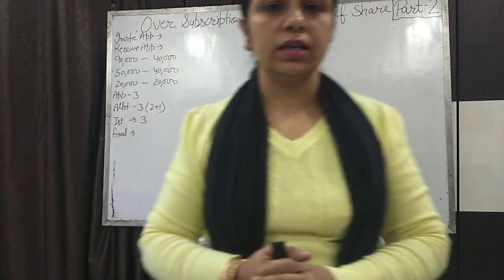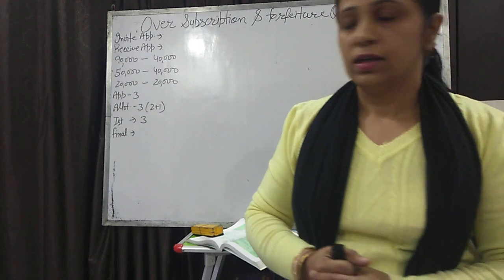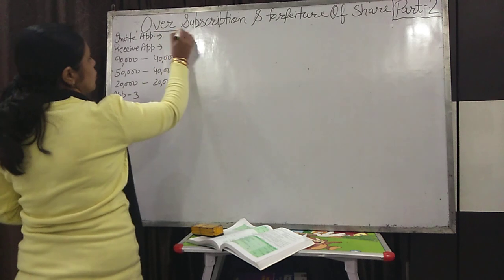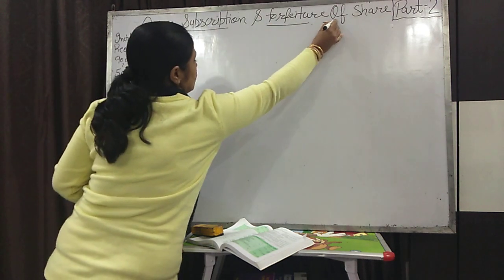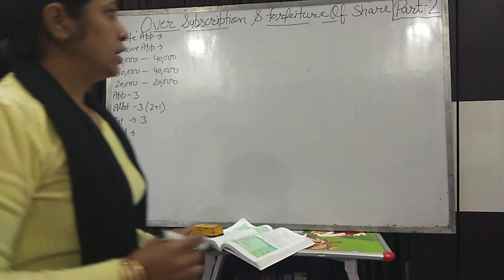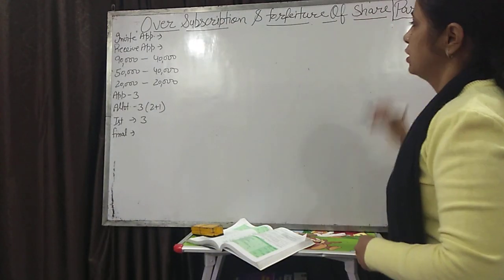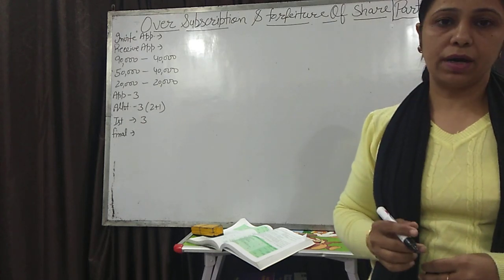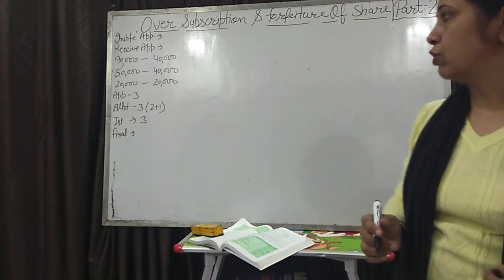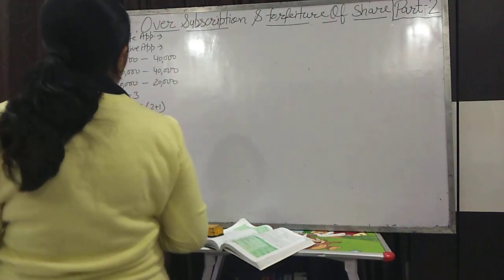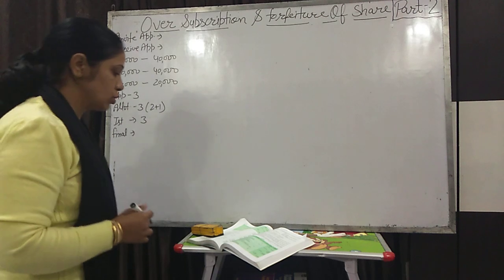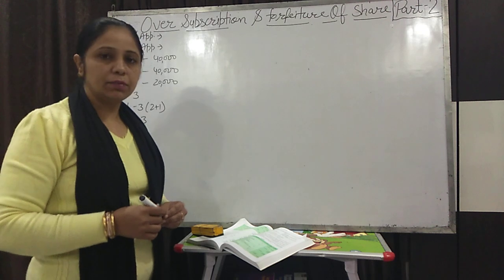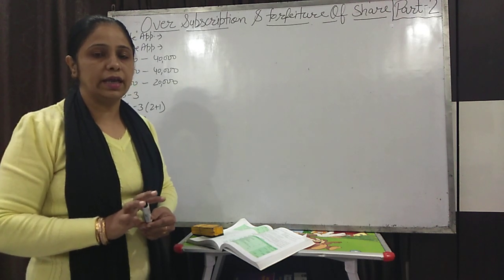Hello students, this is your accounts class. This is the second video lecture of the most important topic, that is oversubscription and forfeiture of shares. In the first part of this topic we have done the forfeiture of shares issued at par. Now today we will do when shares are issued at premium — that is example question number 78 in your book.